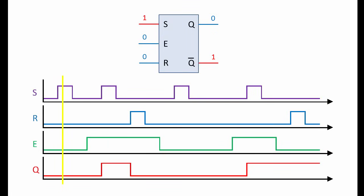S goes high, but it has no effect on the output of the latch. Now E is high, the latch is enabled, so when S goes high, so does Q.